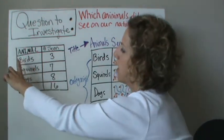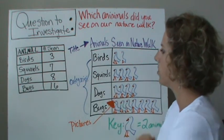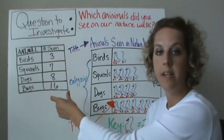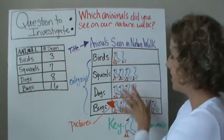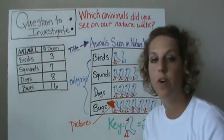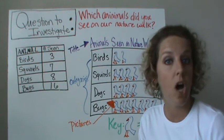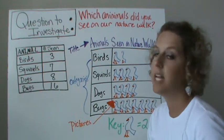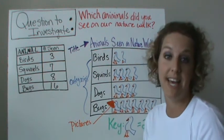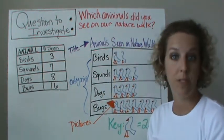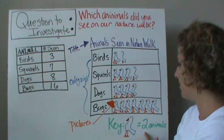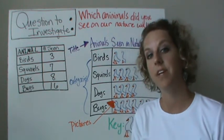Then we had our categories, which we plotted right onto the pictograph. Then we had to figure out how to represent the data with pictures. I was thinking I could do a bee, a dog, a dog bone, or a squirrel — anything related to the pictograph or the question investigated. I chose a bird for my picture. In my key, I said that each bird is equal to two animals seen. Let's see if I filled out the pictograph correctly.